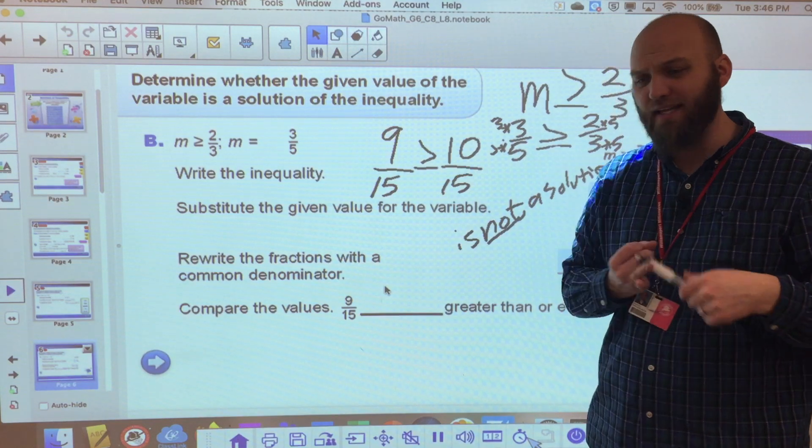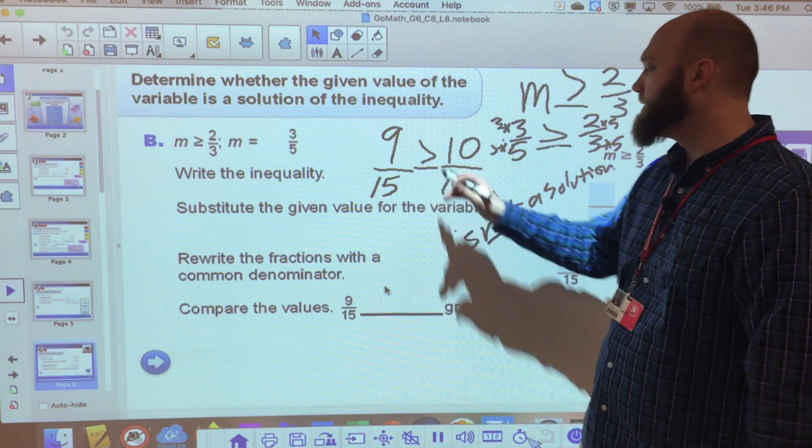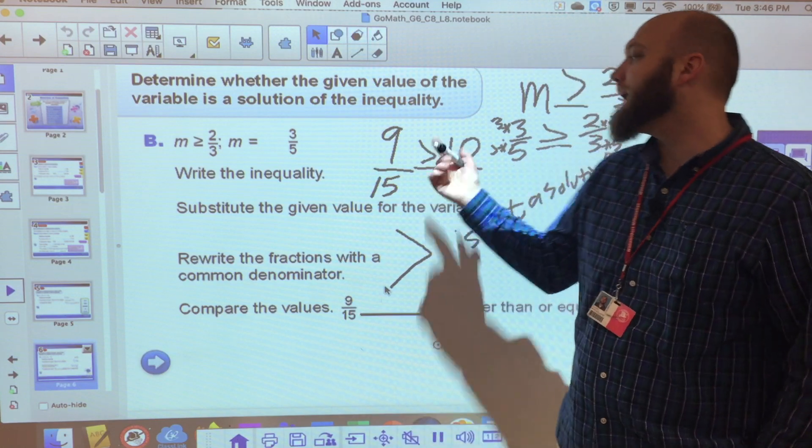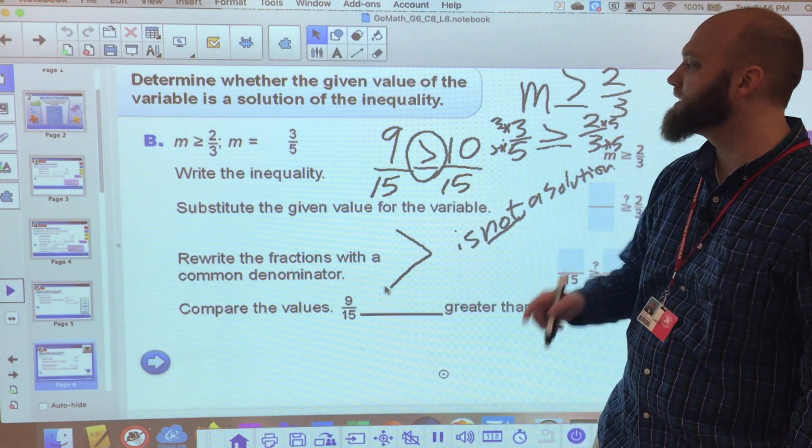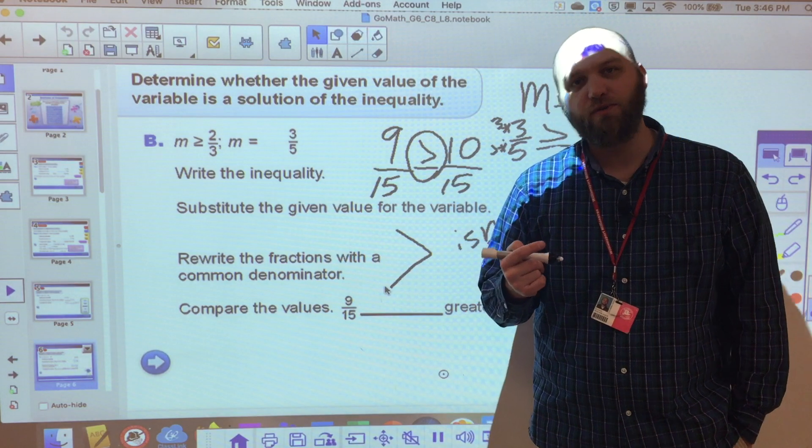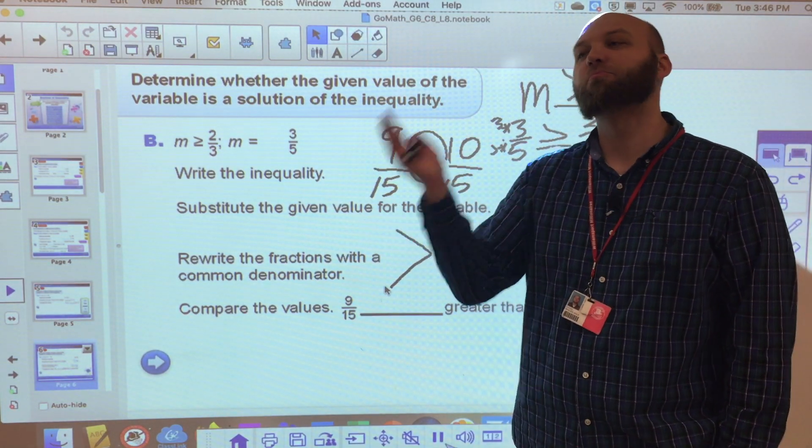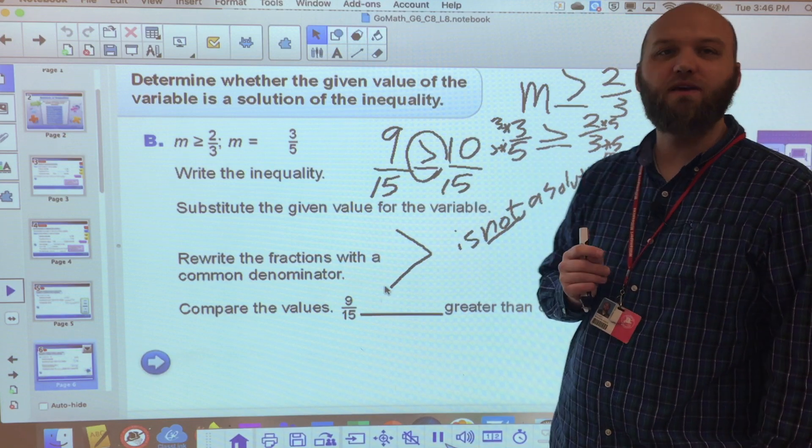Things to look for. Greater than, less than. Always remember that the alligator eats the bigger number. And you'll see this new sign for some of us here, which is greater than or equal to, and less than or equal to, which means they can be equivalent or one or the other.